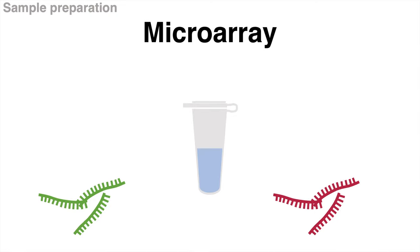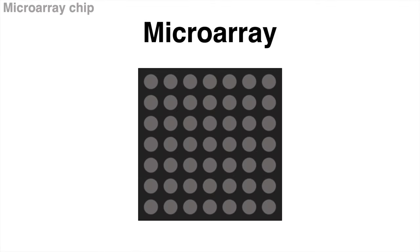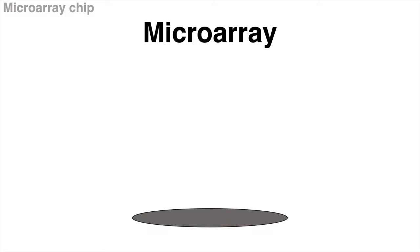Sample preparation is complete. Taking a closer look at the microarray plate, a chip has many spots. Looking more closely into one of them, each spot is coated with multiple identical probes.